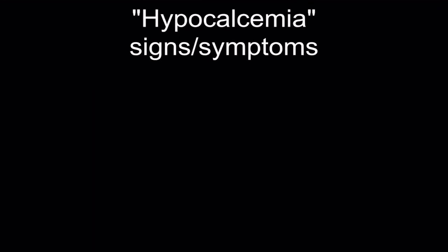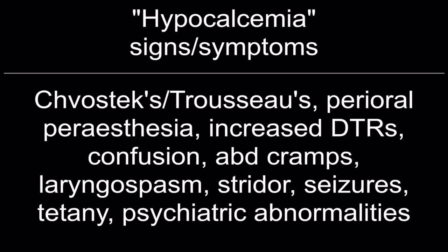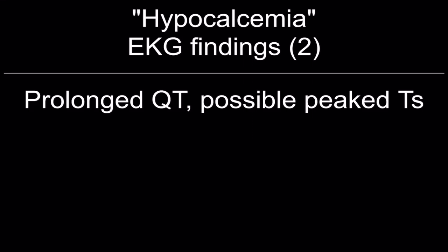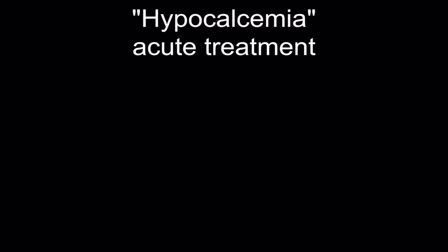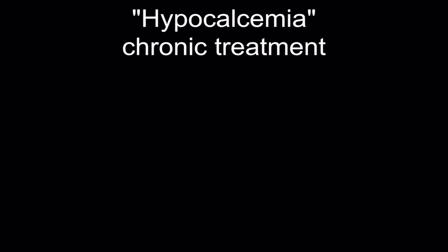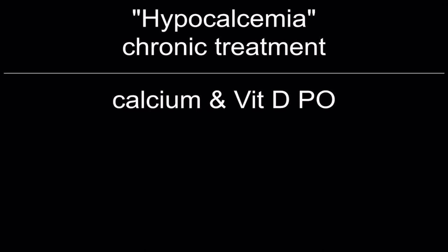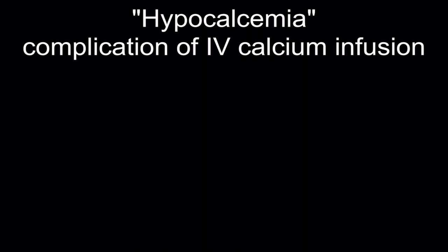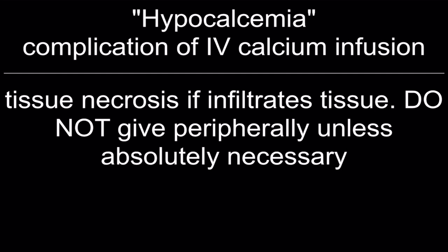Hypocalcemia signs and symptoms: Chvostek and Trousseau signs, perioral paresthesia, increased DTRs, confusion, abdominal cramps, laryngospasm, stridor, seizures, tetany, and psychiatric abnormalities. ECG findings: prolonged QT and possible peaked T waves. Acute treatment: calcium gluconate IV. Chronic treatment: calcium and vitamin D orally. Complication of IV calcium infusion: tissue necrosis if it infiltrates — do not give peripherally unless absolutely necessary.